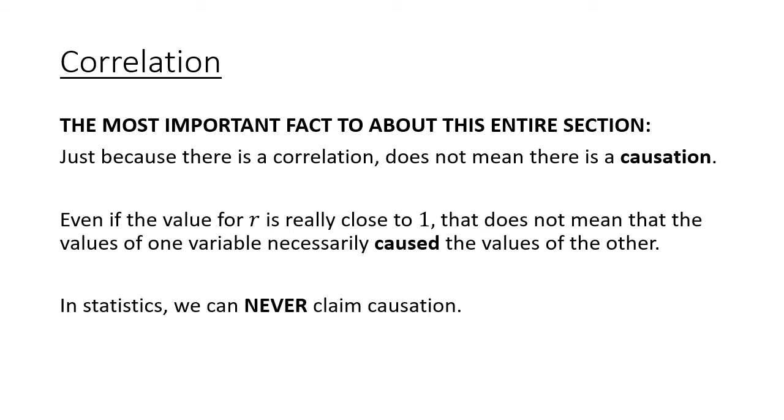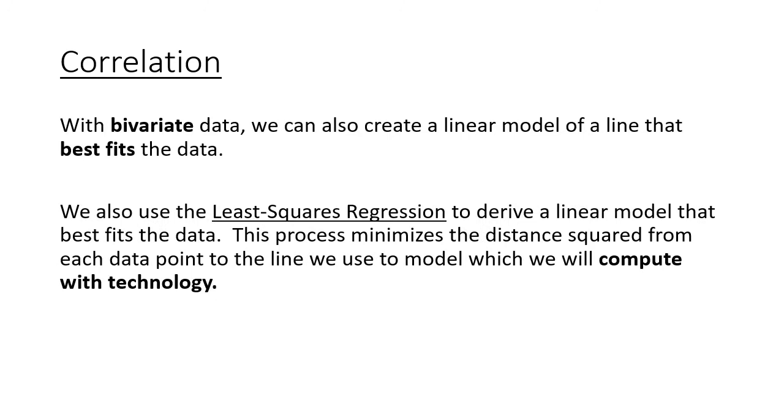Now we talked about the correlation coefficient—we can say that things are correlated using that variable r. A lot of times we also want to create a line or a linear model that's going to best fit the data, or the best fit line. This uses something called the least squares regression. We don't have to worry about the formula because we're just going to use it with technology. We're going to let technology calculate what this line that would best fit our data is actually going to be.